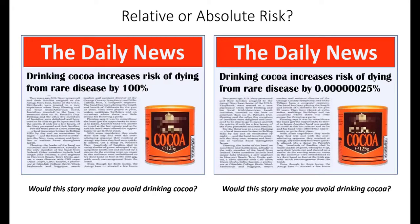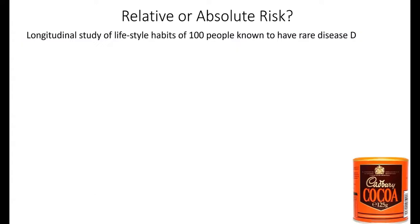It turns out these two stories are describing exactly the same data, but from a different perspective. Let's suppose that this is based on a longitudinal study of the lifestyle habits of 100 people known to have the rare disease D.